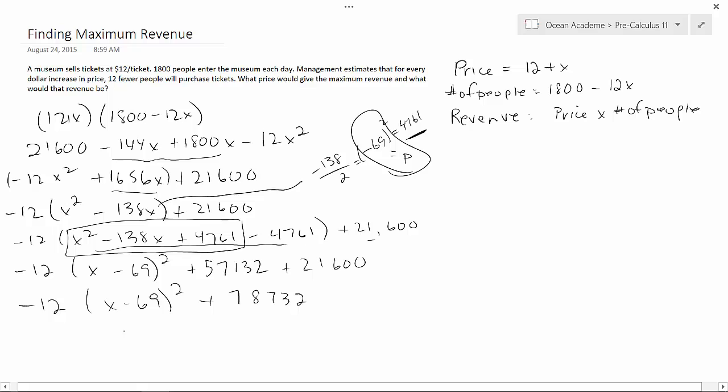Well, first of all, it tells us that X equals 69. What that represents is how many increases. So they were dollar increases, so that means that 69 dollars of increase can make this work. Okay, so that's the number of increases. So 69 plus our original amount was 12, so our final amount would be $81. Okay, now this represents our maximum revenue. So to answer the question, our maximum revenue is $78,732.